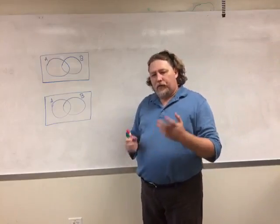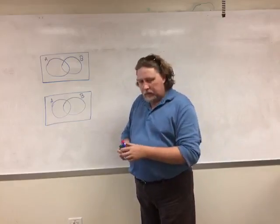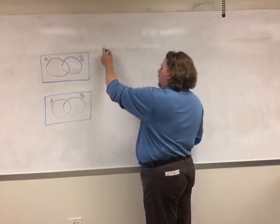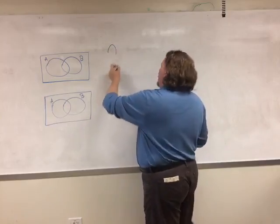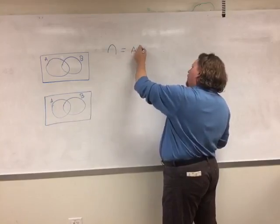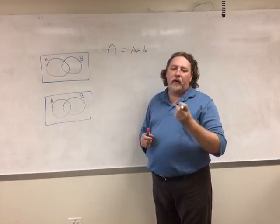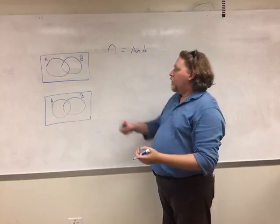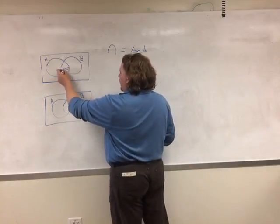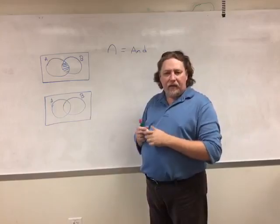Two important ideas to get really clear on are intersection and union. The intersection symbol looks like this, and it is the same thing as the word AND. When we talk about the intersection of two things, we're talking about being both of them. In this picture where I have A and B, the intersection is that overlapping region — A and B.